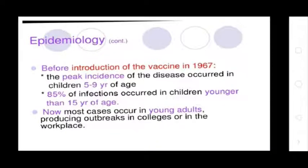Before introduction of the vaccine in 1967, the peak incidence of disease occurred in children 5 to 9 years of age. 85% of infections occurred in children younger than 15 years of age. Now, most cases occur in young adults, producing outbreaks in colleges or in the workplace.